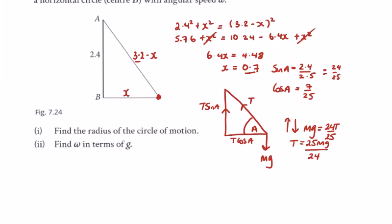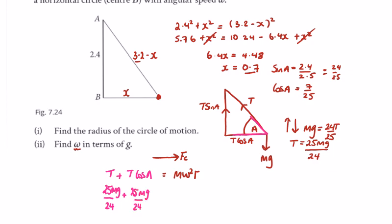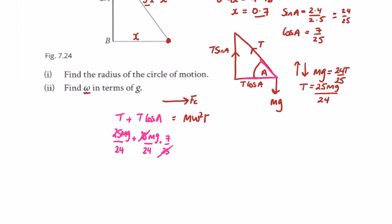Our combined forces are equal to the centripetal force. We're looking at mω²r, which equals T cos A plus T. So we have 25mg/24 plus 25mg/24 times cos A, which is 7/25. That gives us 25/24 plus 7/24, which is 32mg/24, simplifying to 4mg/3.